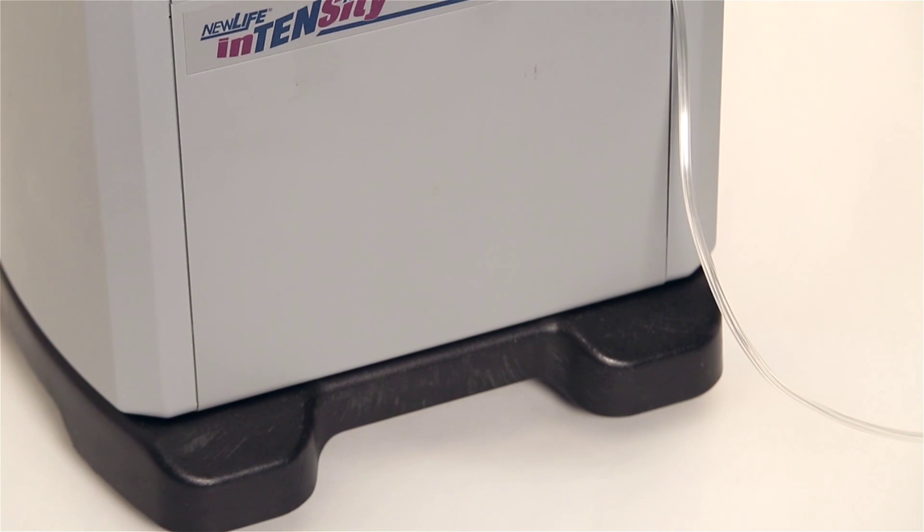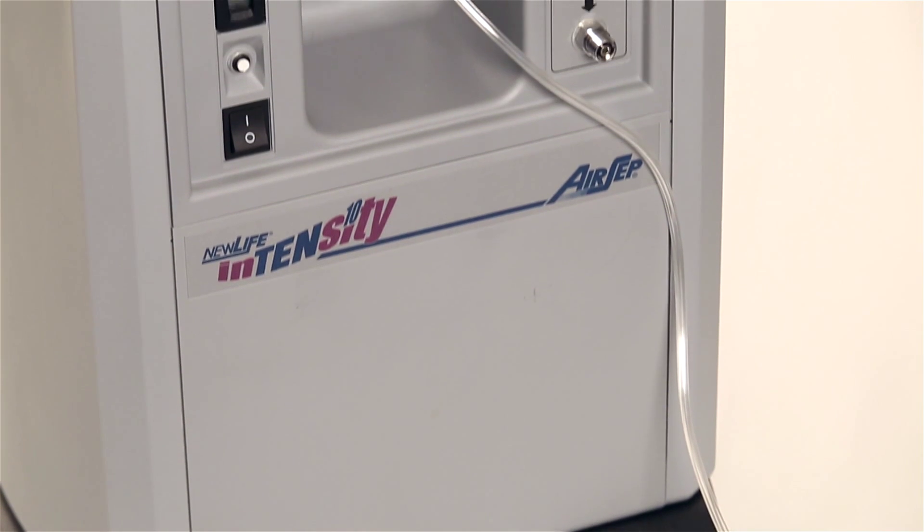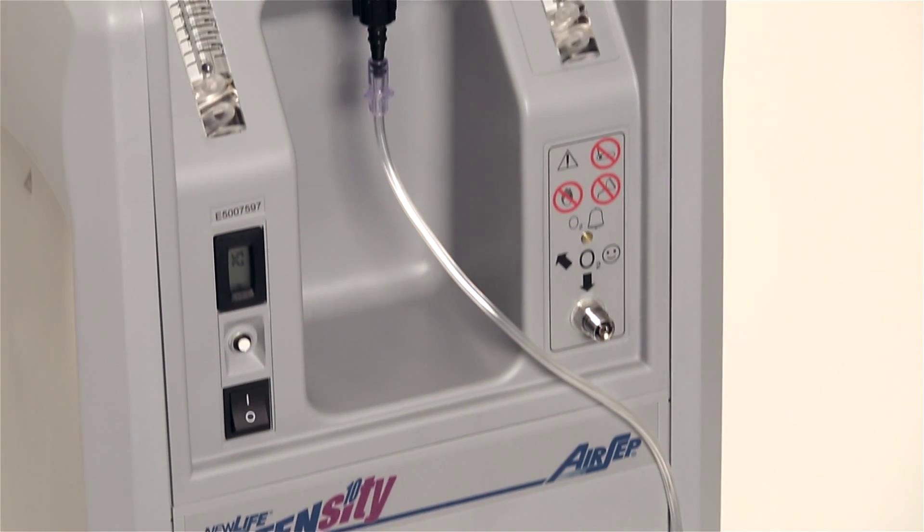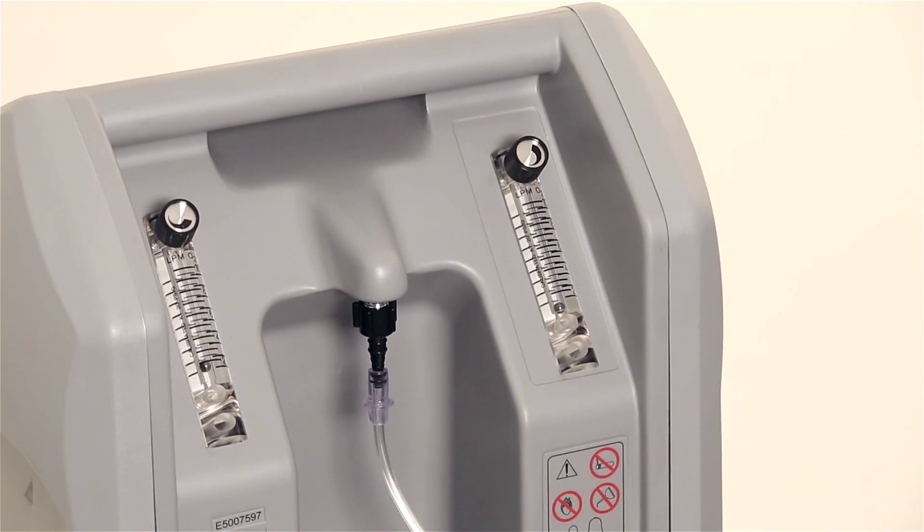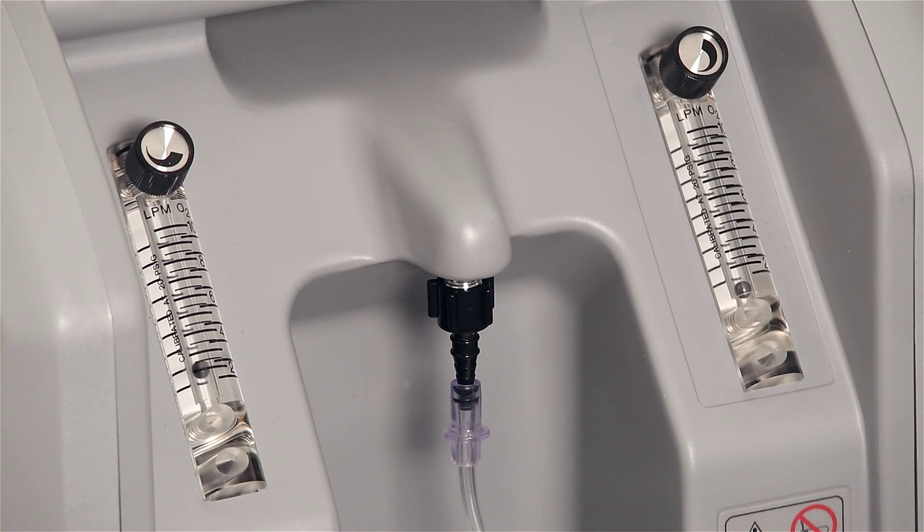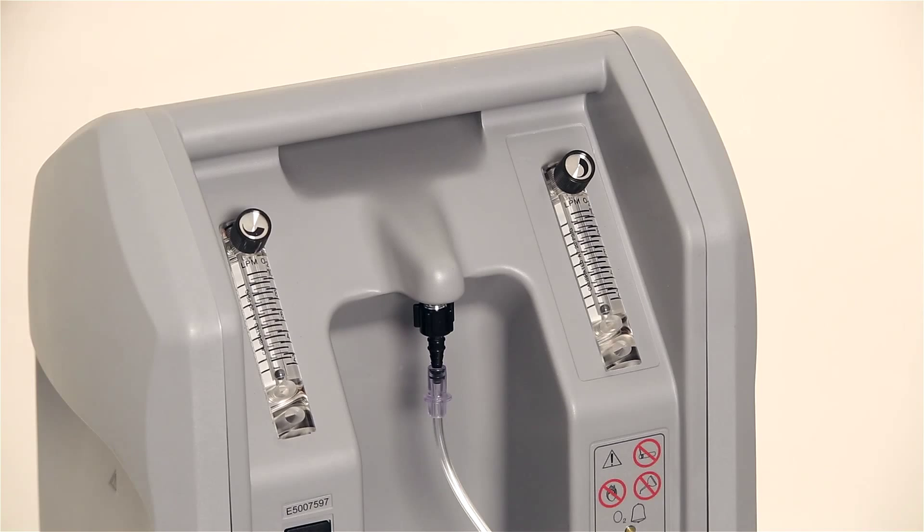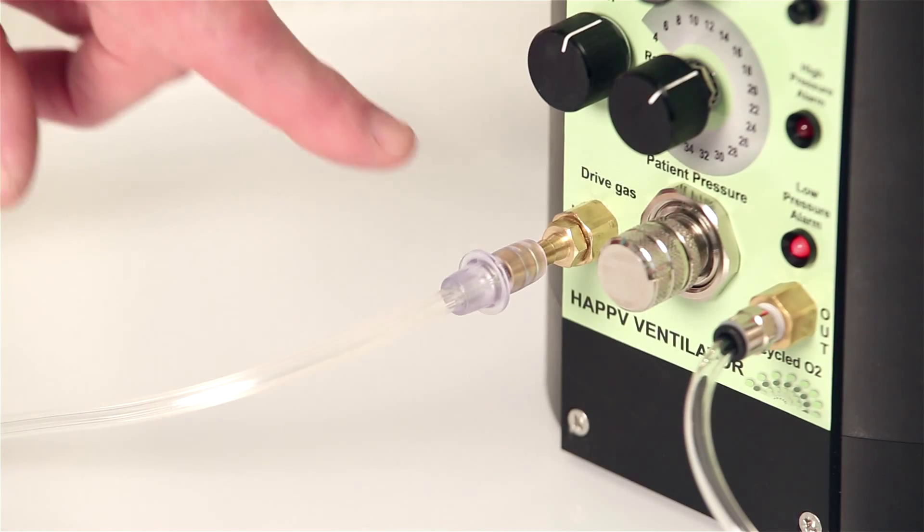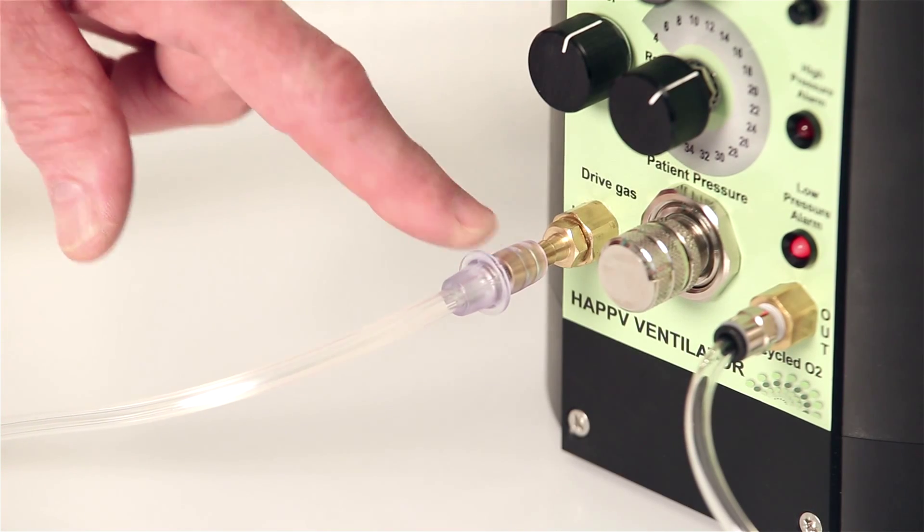The ventilator can be driven by any gas supply from 1.5 bar 20 psi to 5 bar 75 psi. If a suitable oxygen concentrator is used, the drive gas tube can simply be connected directly from the concentrator outlet to the drive gas inlet on the ventilator.